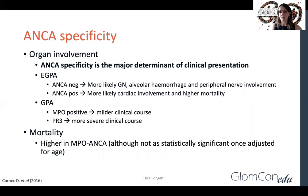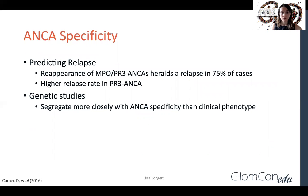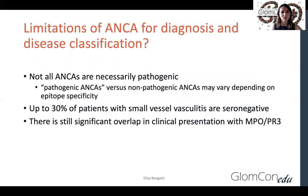Patients with GPA who are MPO-positive have a milder clinical course compared to those who are PR3-positive. In terms of mortality, MPO-ANCA is a worse prognostic indicator than PR3, whereas PR3-positive patients are more likely to have a higher rate of relapse compared to MPO-positive patients. ANCA specificity is also important for genetic studies, as diseases segregate more closely with ANCA specificity than clinical phenotype. However, limitations of relying too heavily on ANCA specificity include that not all ANCAs are necessarily pathogenic — there can be pathogenic and non-pathogenic ANCAs depending on epitope specificity — and up to 30% of patients are seronegative, with significant clinical overlap between MPO and PR3 ANCA-positive patients.